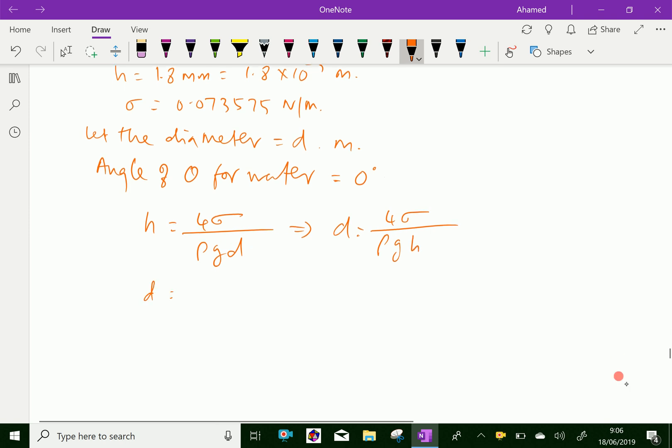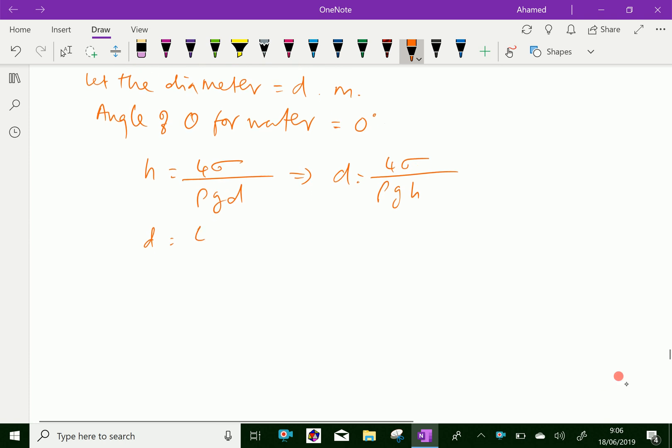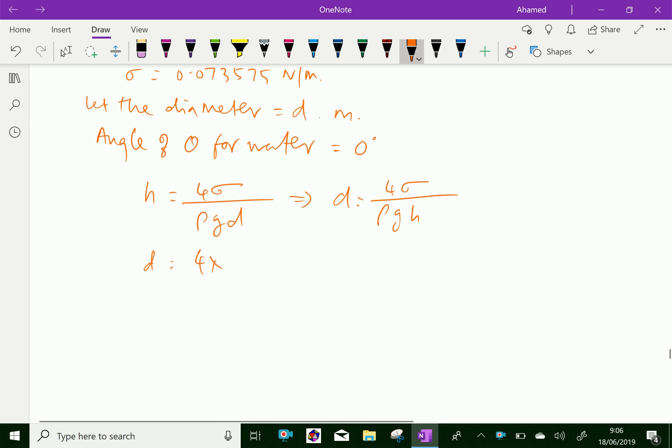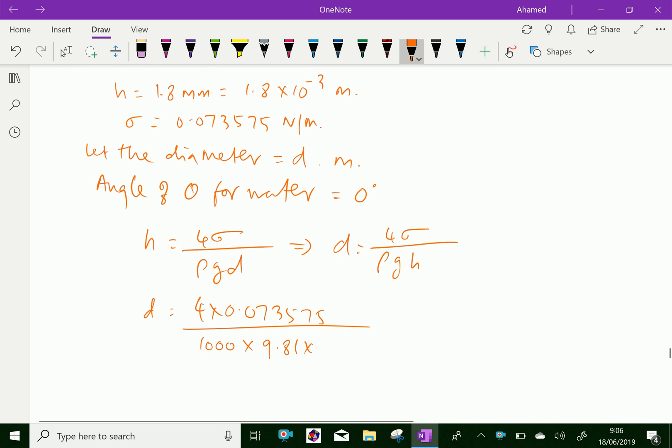That is d equals 4 times sigma 0.073575, over rho of water which is 1000, and g is 9.81, times h which is 1.8 times 10 to the minus 3.